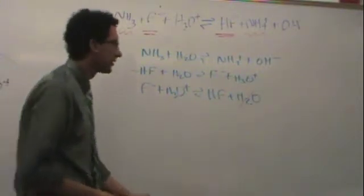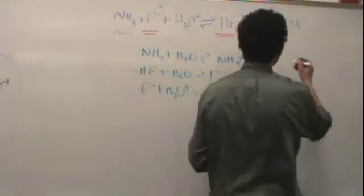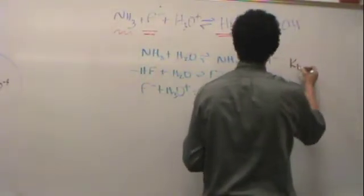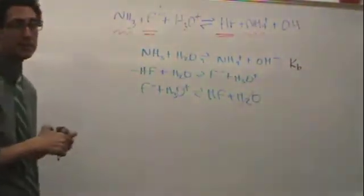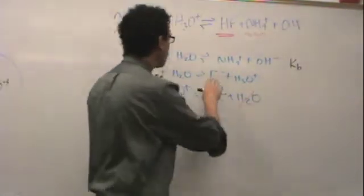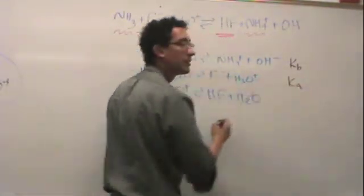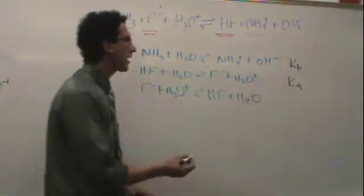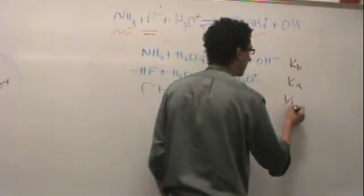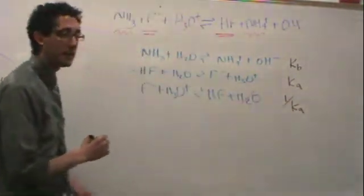Now the next step, if there weren't enough already, this from the back page has a KB that's given. This one here has a KA that's given. Well, if I flip the reaction, I've just flipped the K, inversed it.